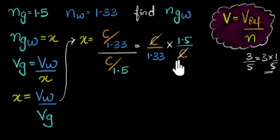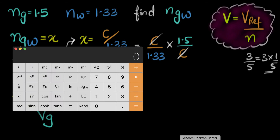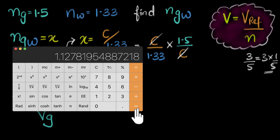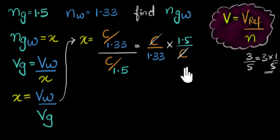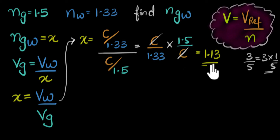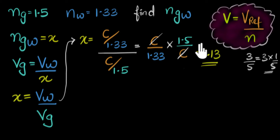So we just have to divide 1.5 by 1.33. Using a calculator: 1.5 divided by 1.33 gives 1.127, which I'll approximate as 1.13. That's the refractive index of glass with respect to water — it tells us that the speed of light in glass is the speed of light in water divided by 1.13, so it's that much slower in glass.